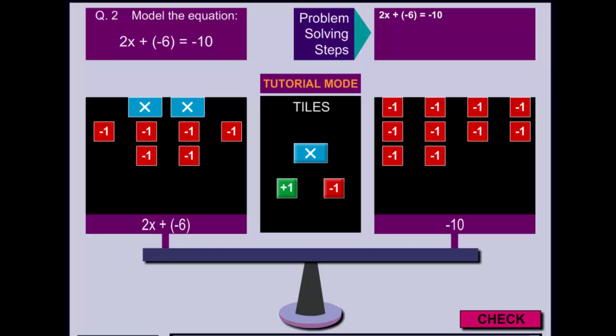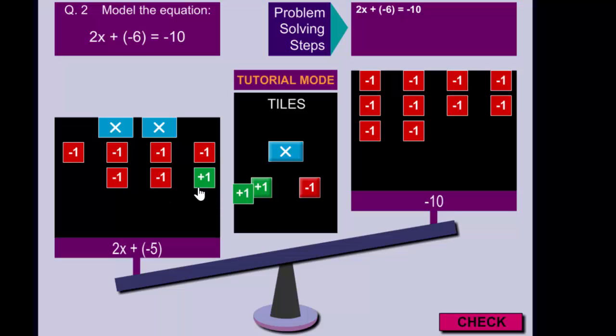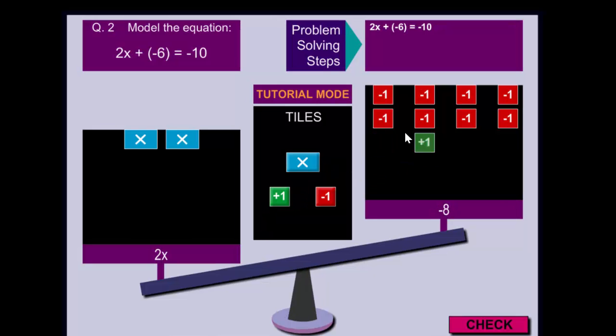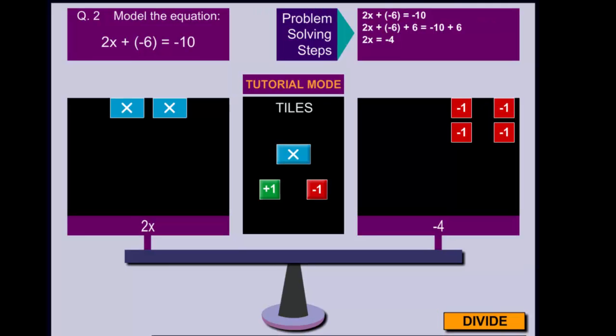This scale models the equation 2x plus negative 6 equals negative 10. We can solve the equation, that is, figure out what value of x makes the scale balance, by doing the same thing on both sides of the scale. We need to isolate the x tiles first. There are 6 negative tiles on the left. To remove these negative tiles, we'll place a positive tile on each one. This creates zero pairs, and removes the tiles from the board. To keep the scale balanced, we have to do the same thing on the other side of the scale.